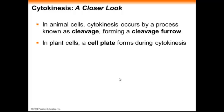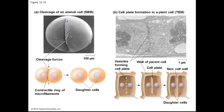In cytokinesis, a couple of things happen depending on the type of cell. In animal cells, cytokinesis occurs by a process known as cleavage, forming a cleavage furrow — kind of like pulling a drawstring together on a balloon, so division occurs from the outside in. In plant cells, a cell plate forms instead: vesicles containing cellulose form along the metaphase plate, so division occurs from the inside out.